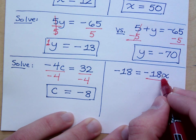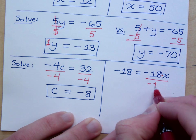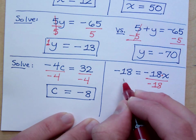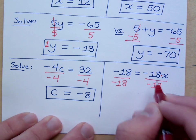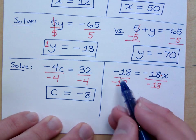Notice that I'm dividing by the coefficient of the variable. The coefficient of the variable is negative 18. So divide by negative 18 over here, which means I have to divide by negative 18 on the left side as well.